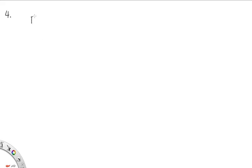Problem 4. Describe how the momentum of the ball changes as it bounces up and down. The momentum of the ball is changing with time, but that doesn't disobey conservation of momentum because of impulse. We know that impulse Ft equals the change in momentum, so F equals m times delta v over delta t. The main force acting here is the weight force due to gravity, so this equals mg.